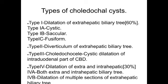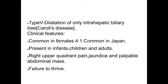Type 2 is diverticulum of extra-hepatic biliary tree. Type 3 is choledochocele — cystic dilatation of the intra-duodenal part of the common bile duct. Type 4 is dilatation of both extra- and intra-hepatic biliary tree, accounting for 30% of cases; Type 4a involves both, while Type 4b involves multiple sections of the extra-hepatic biliary tree. Type 5 is dilatation of only intra-hepatic biliary tree, called Caroli's disease.